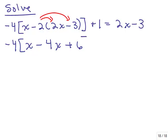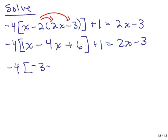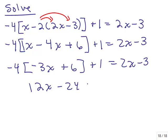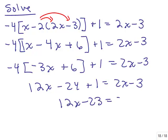Negative 2 times 2x is minus 4x, and negative 2 times negative 3 is plus 6. After distributing, I simplify within the brackets: x minus 4x is negative 3x plus 6, plus 1 equals 2x minus 3. Distributing the outer brackets: 12x minus 24 plus 1 equals 2x minus 3, so 12x minus 23 equals 2x minus 3. You should get 10x equals 20, so x equals 2.